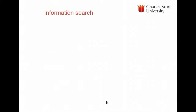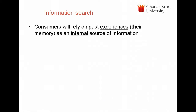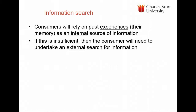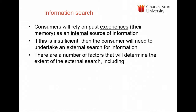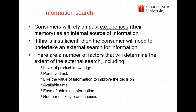The next stage in the consumer decision-making process is information search. Consumers first rely on what they already know, because there's usually a cost involved — time, effort, and money. If this is insufficient and the decision is important enough, they will undertake an external search. Knowing more about the product reduces search. Perceived risk also reduces search — consumers rely on well-known brands or retailers with established reputations. More time available, easier access to information online, and more brand choices all tend to increase search.